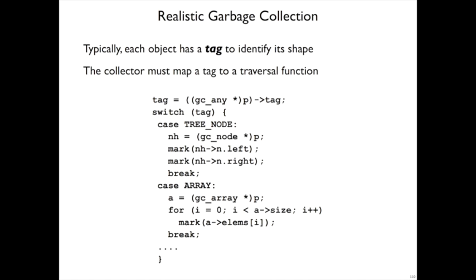The usual way for dealing with this variety of shapes is to have a tag associated with each object in a particular place in the object. For example, the mark function in the garbage collector might take a pointer to an object that is already marked as gray and then cast it to some generic GC any object to extract the tag out. So the idea is that all objects have some number tag at the beginning of the object.